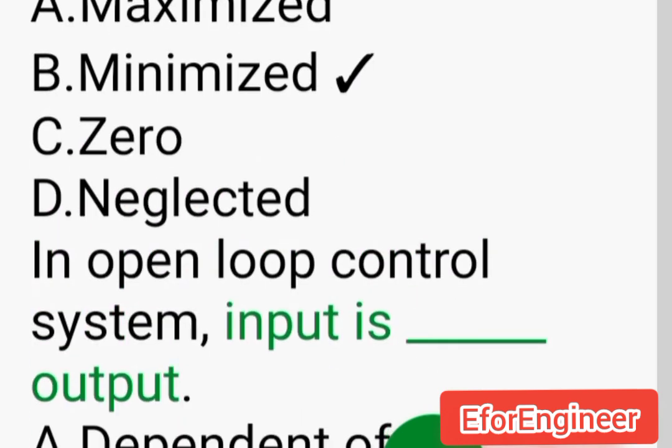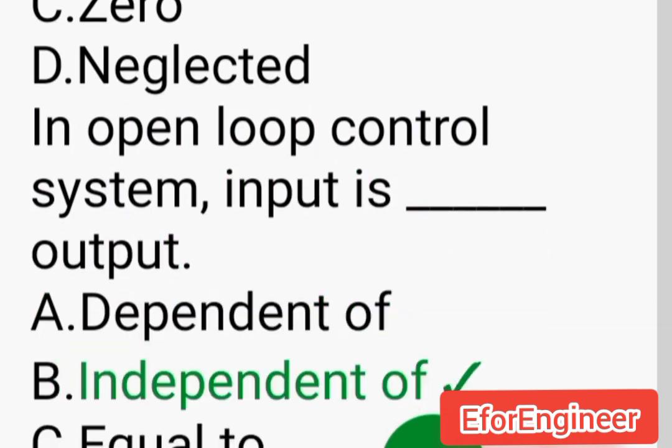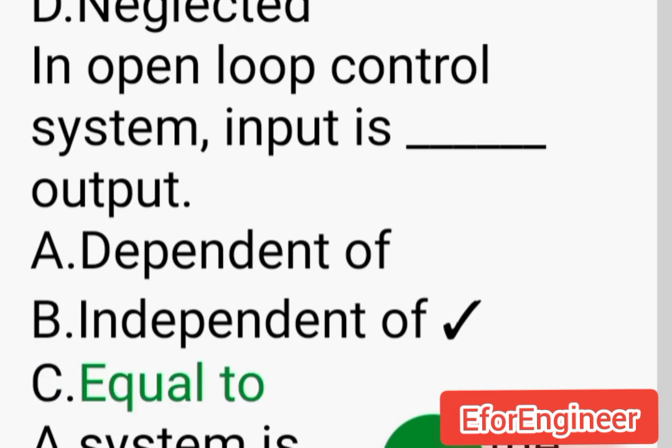In open loop control system, input is ___ output: A. Dependent of, B. Independent of, C. Equal to.